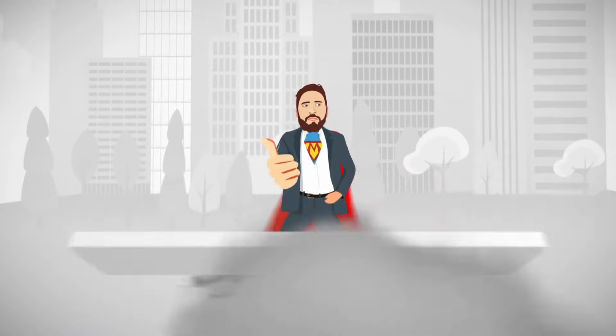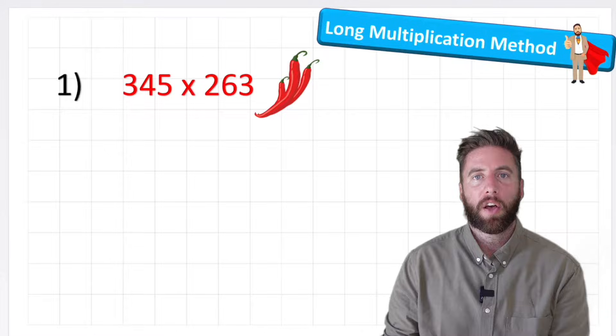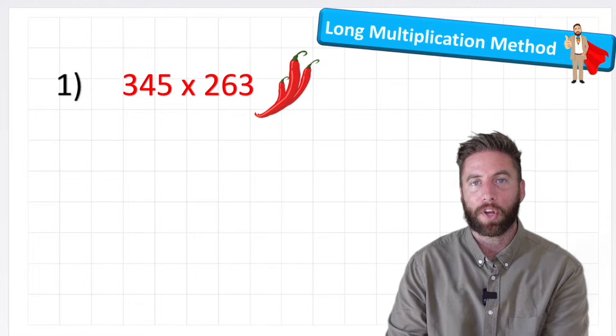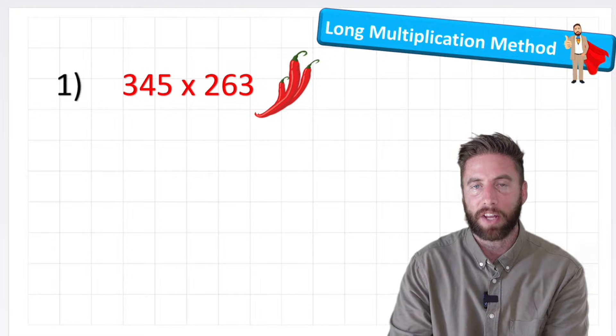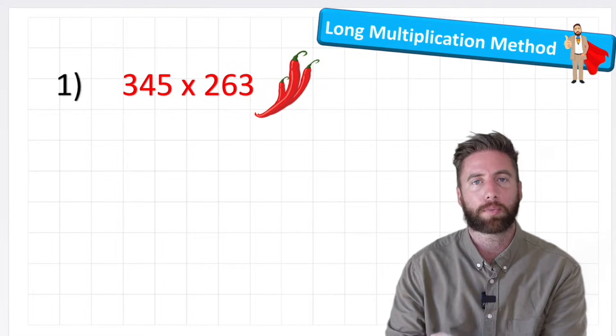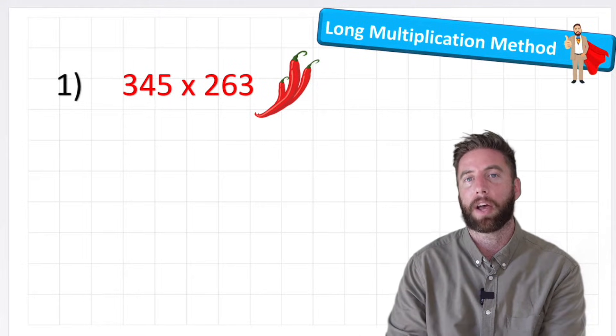So let's begin. We're going to look at one example today: 345 times 263, and we're going to call that a red chili challenge just because it's a three-digit number multiplied by another three digits.